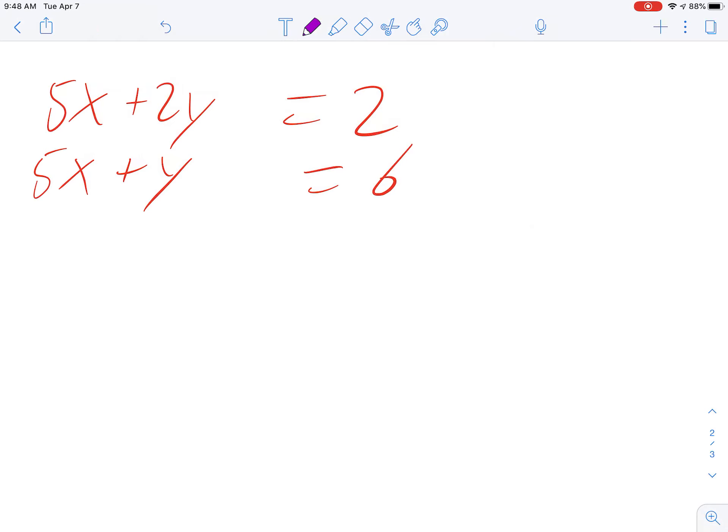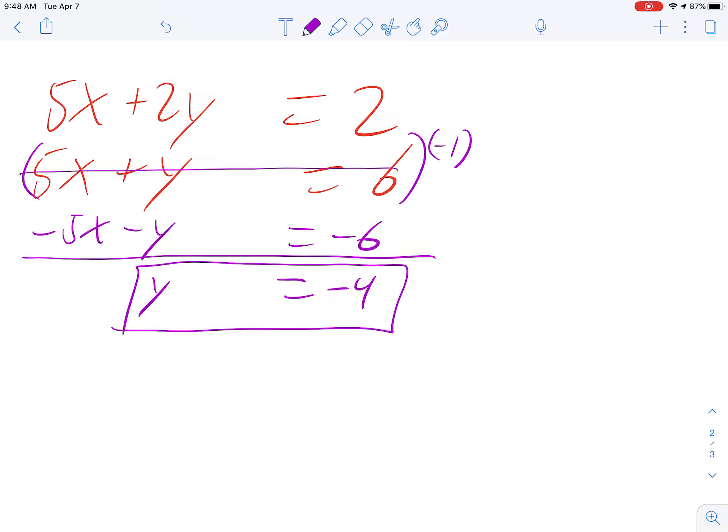I'm going to eliminate the x's by just multiplying that first equation by negative 1. And so that's going to become negative 5x minus 2y equals negative 2. So I just rewrote that. Now I'm going to add the equations. The x's cancel. 2y and negative 1y is positive y. 2 and negative 6 is negative 4. And y is negative 4.